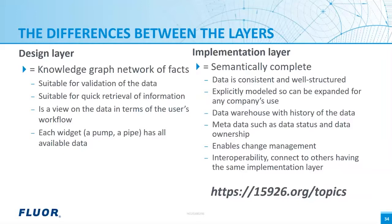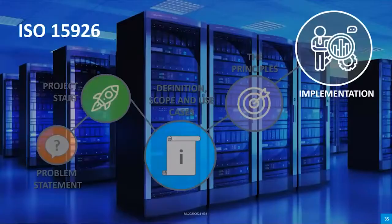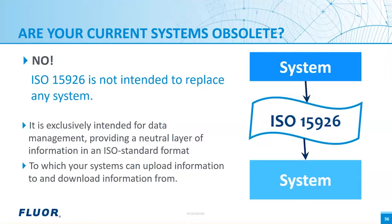Finally, if you want to see how knowledge graphs, templates, and life cycle models really work, go to our website at 15926.org and click on 'topics.' This website is very technical, so it explains all the ins and outs. You already have data integration — are these same systems obsolete? The answer is no; these systems are as useful as always. ISO 15926 is not intended to replace any system. It is used for data management to act as a go-between — a neutral layer in an ISO-standard format, something you interface to and from.